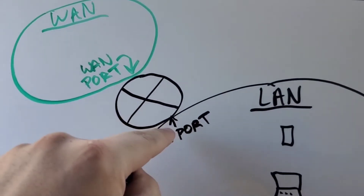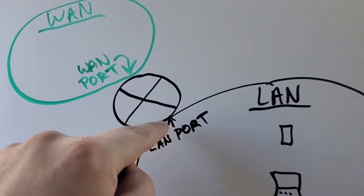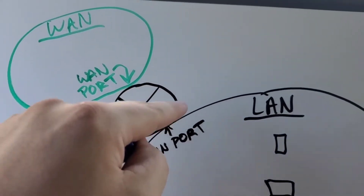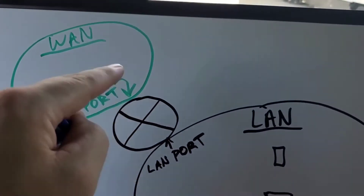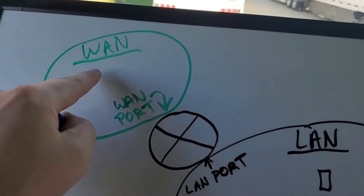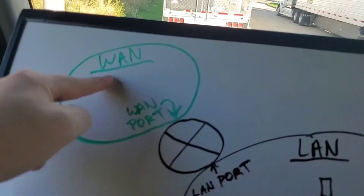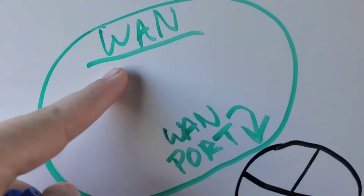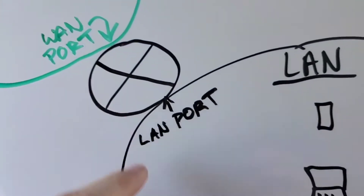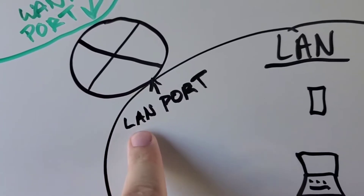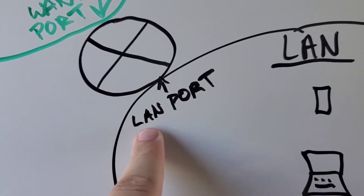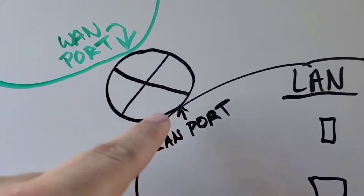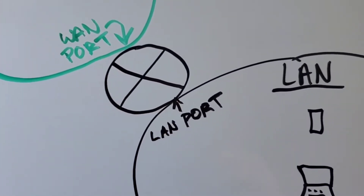On your router, you have LAN ports and you have a WAN port. The router separates these two networks — the wide area network, represented by WAN, and the local area network, the LAN. So the WAN port and LAN port separate the networks.